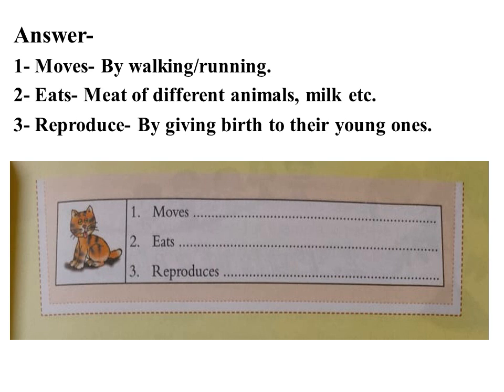In this slide you can see a picture of a cat is given, with the same questions for the cat also. How does it move? A cat moves by walking or running. A cat eats meat of different animals like chicken and others, and they drink milk also. How do they reproduce? They reproduce by giving birth to their young ones.